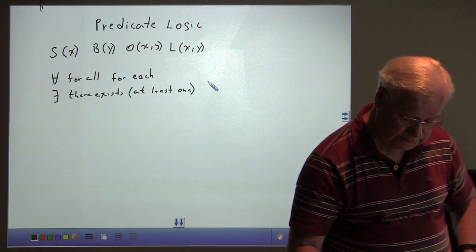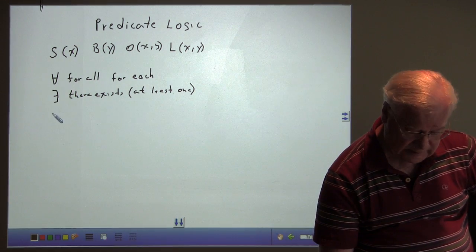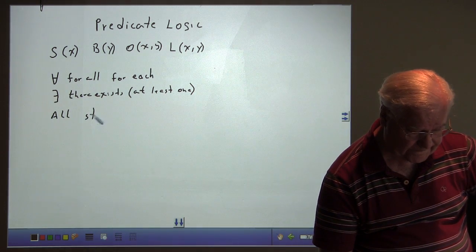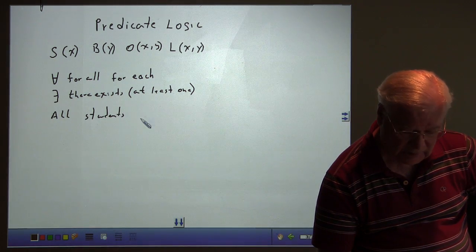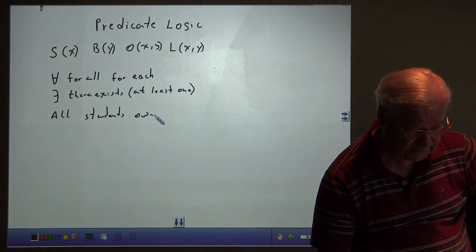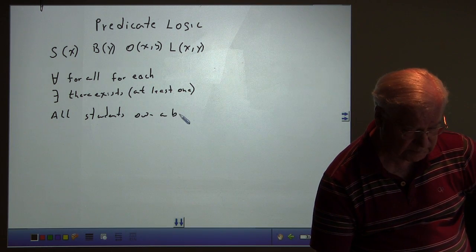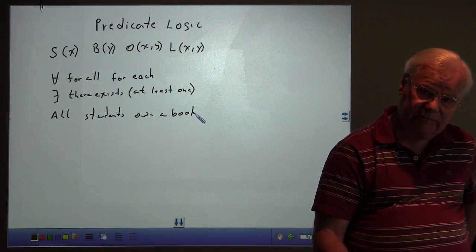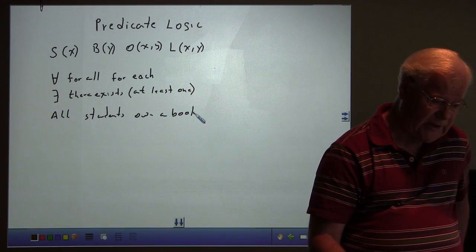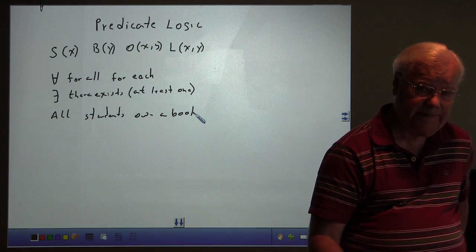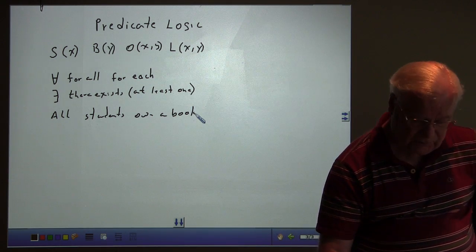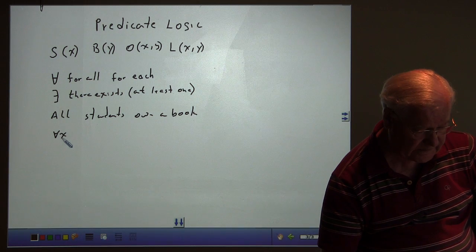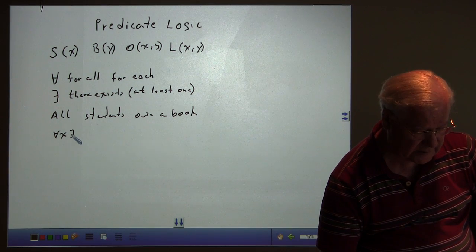So, what if we wanted to say that all students own a book? Well, does that mean they all own the same book? No. In this reference, we mean that all students own a book, but not necessarily the same book. So, to write that in symbols, we would say, for all X, there exists a Y,